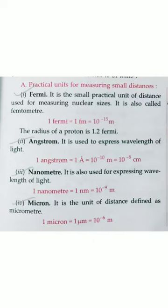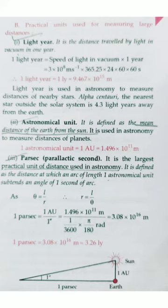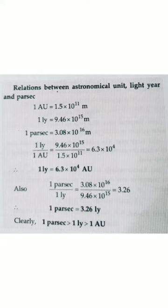Next we talk about practical units used for measuring large distances. For large distances we have light year, astronomical unit, and parsec. The light year is the distance travelled by light in vacuum in one year. Astronomical unit is the mean distance of the earth from the sun, and parsec is the largest practical unit used in the distance of astronomy.